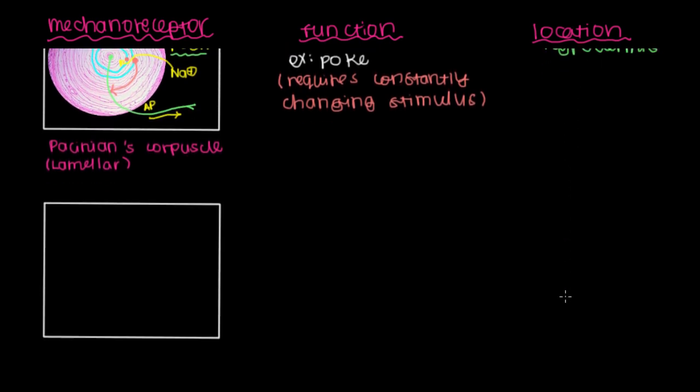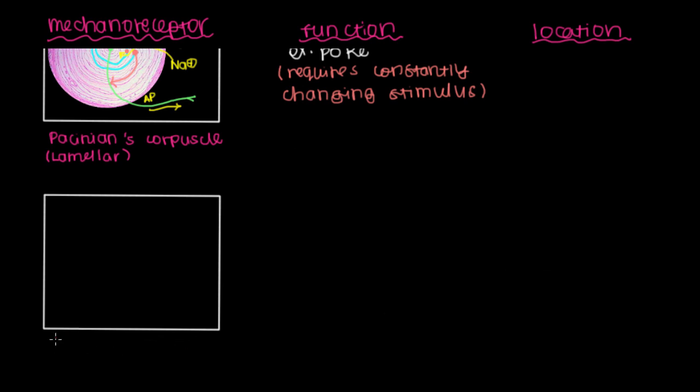And as we move further along, we can talk about the next mechanoreceptor that is called Merkel's disc. So Merkel's disc. We've been talking about corpuscles all this time, but now we'll just talk about a single disc.